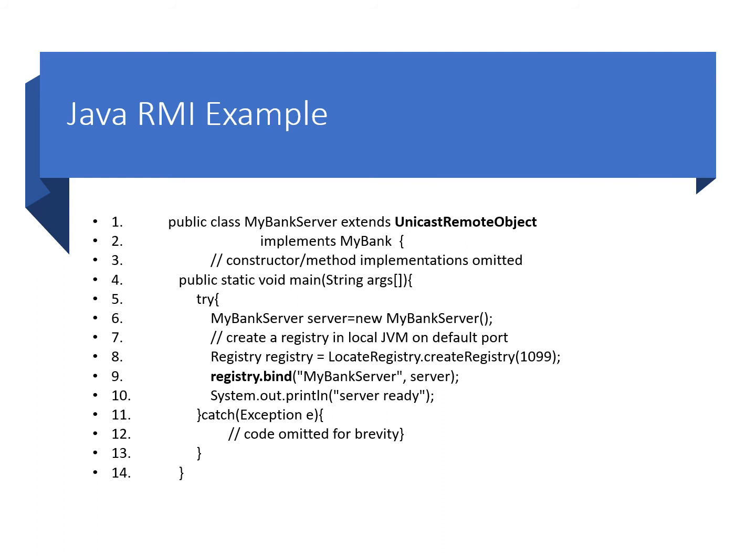Once we've defined our remote interface, we must provide a class that implements it, as shown on the slide. The server extends a UnicastRemoteObject class, which provides the functionality to instantiate remotely callable objects — i.e., the server can be called across the network. Once the server is constructed, its availability must be advertised to remote clients. This is achieved by storing a reference to the object in an RMI registry and associating a logical name with it — in this example, 'MyBankServer'. The registry is a simple directory service that enables clients to look up the network address and object reference.